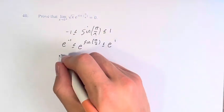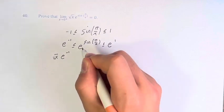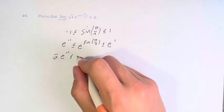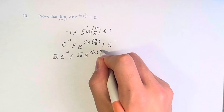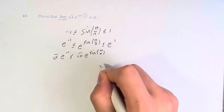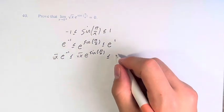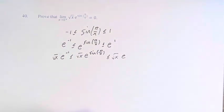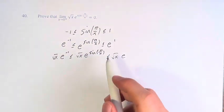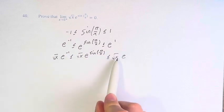So the square root of x times e to the negative 1 is less than or equal to the square root of x times e to the sine of pi over x, which is less than or equal to the square root of x times e to the 1, which is just e. So therefore, this function is in between these two functions.